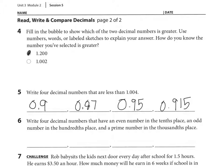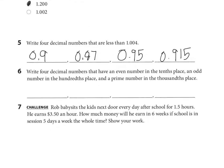Looking at number 6, it says write four decimal numbers that have an even number in the tenths place, an odd number in the hundredths place, and a prime number in the thousandths place. So first we have to think, what are prime numbers? Prime numbers would be 1, 3, 5, 7. Let's think of the odd numbers. An odd number would be 1, 3, 5, 7, 9. And an even number would be 2, 4, 6, 8, 0.